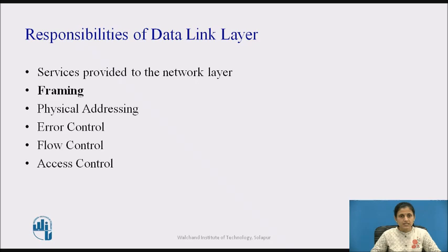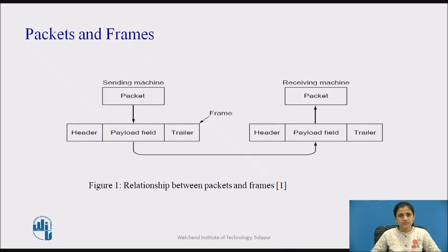The data link layer divides the stream of bits received from the network layer into manageable data units called frames. For synchronization between sender and receiver, one or more synchronization bits are usually added to the beginning of each frame. The data link layer takes the packets from the network layer and encapsulates them into frames for transmission.